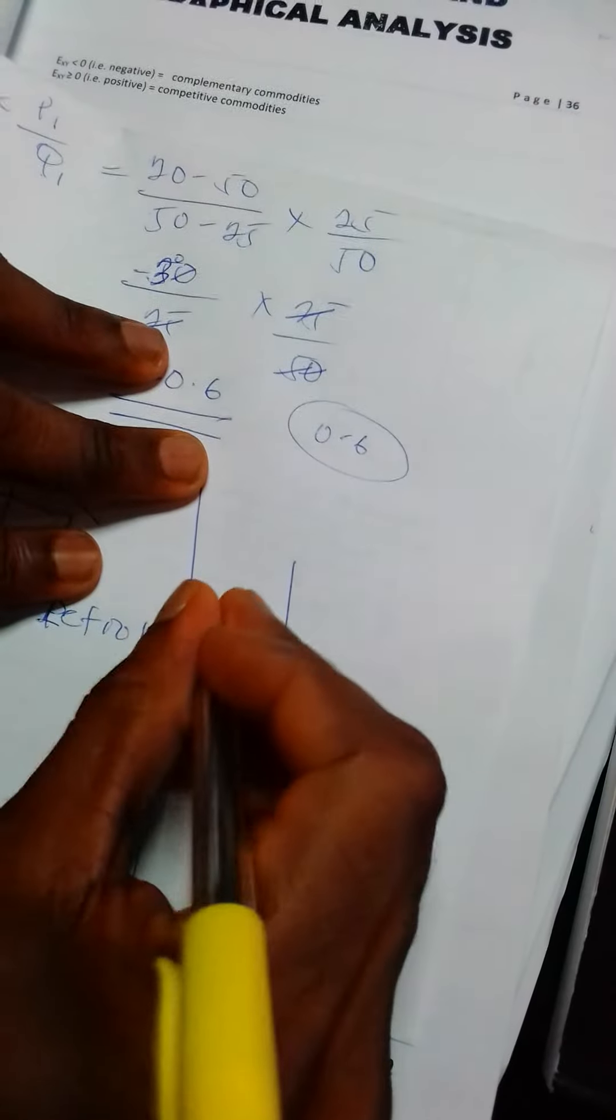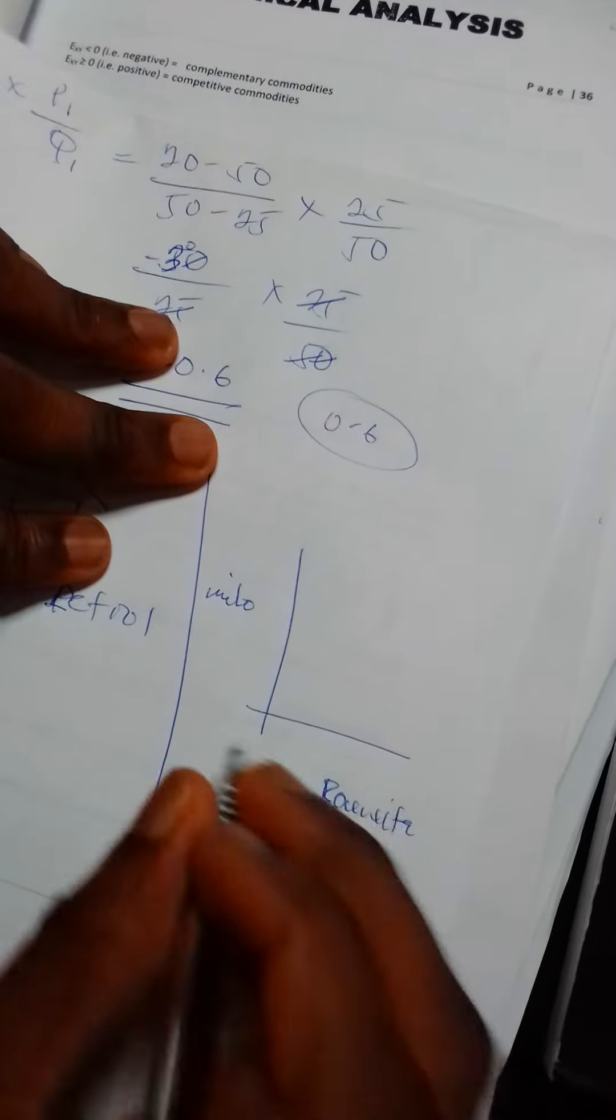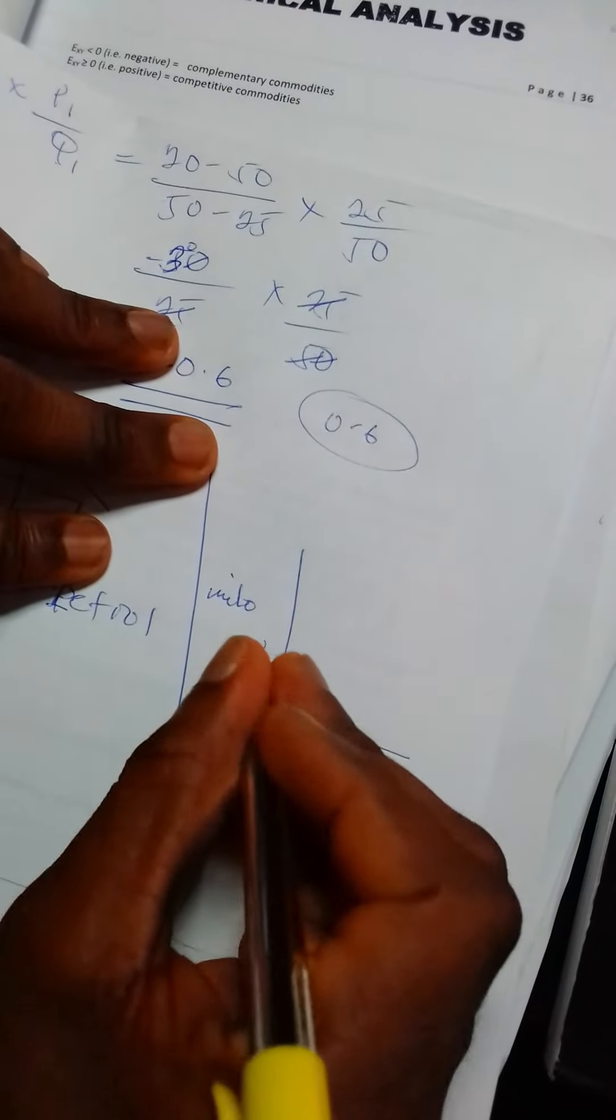Let's have a diagram like this. So we'll provide an example of competitive goods: Milo and Bournvita.